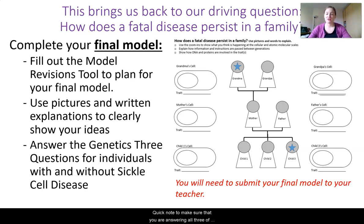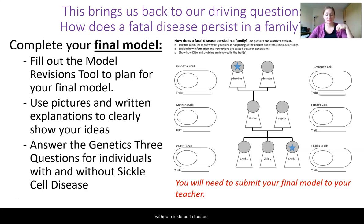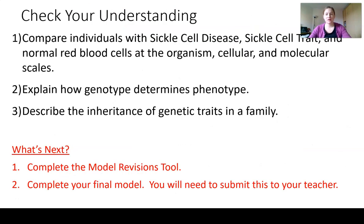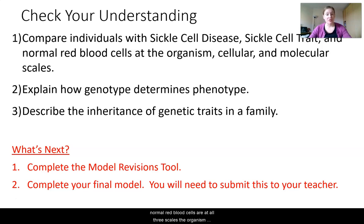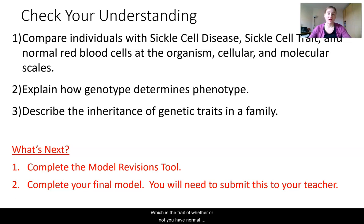Make sure you are answering all three genetics questions — organism scale, cellular scale, and molecular scale — to talk about people with and without sickle cell disease. For a quick check for understanding, try this with a classmate over the phone or with a family member: compare individuals with sickle cell disease, sickle cell trait, and normal red blood cells at all three scales. Explain how a person's genotype determines their phenotype, and describe how the inheritance of genetic traits in a family happens.